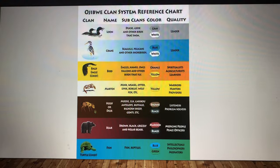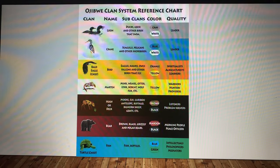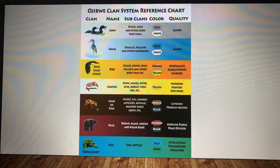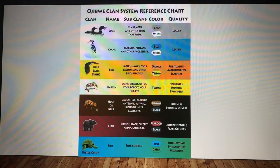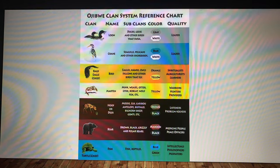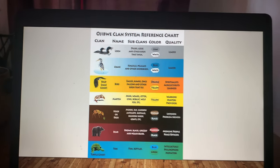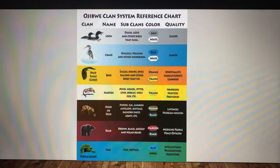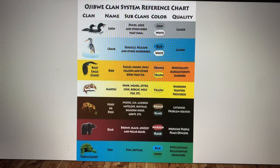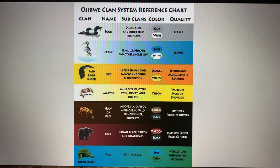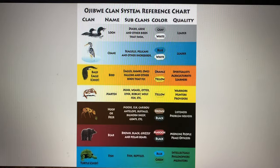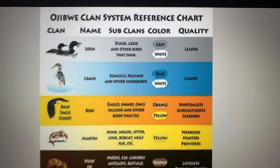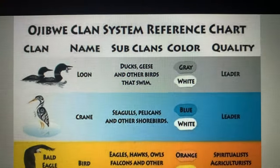Alright, so I just wanted to end this session with an Ojibwe clan system reference chart that I found online. I don't know who the main source is of this, but it's a good little reference guide to know a little bit more about what our clans do, some of their colors, and the roles they play in our communities. So real quick I'll just scan through this.